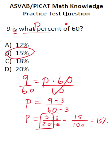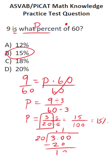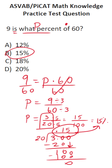The other route is to do 3 divided by 20 using long division. 20 doesn't go into 3, so add a decimal and a couple of zero placeholders. Bring the decimal up into the answer. 20 times 1 gets closest to 30 without going over — 20 times 1 is 20, and 30 minus 20 is 10. Bring down the 0, and 20 times 5 is exactly 100 with no remainder. That gives us 0.15, the same as 15 percent.